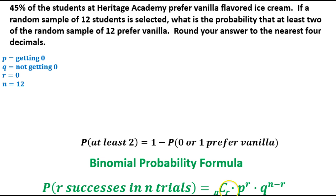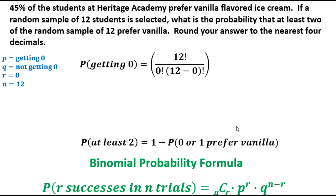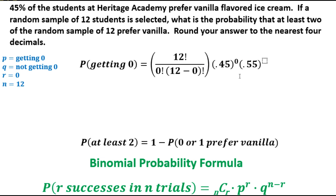We're going to put this together. The combination shown here is 12 choose 0. The probability of success is 0.45, raised to the r power of 0. The probability of failure is 1 minus 0.45, which is 0.55, raised to the n minus r power of 12. Notice both exponents — 0 and 12 — always add up to the total number of trials.